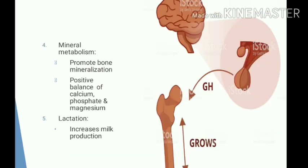Growth hormone promotes mineralization of bones, especially in growing children, and this effect is mediated through insulin-like growth factor. It causes a positive balance of calcium, phosphate, and magnesium, and increases renal absorption of these minerals. It also promotes retention of sodium, potassium, and chloride in the body. Growth hormone increases milk production in lactating animals, with actions similar to prolactin — known as the prolactin-like effects of growth hormone.